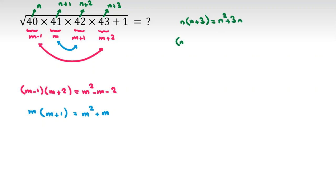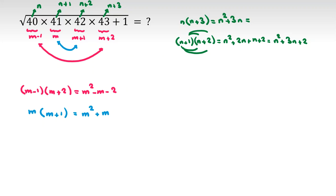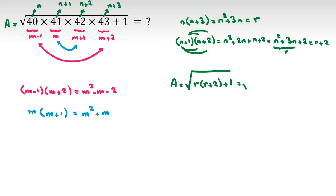And n plus 1 times n plus 2 equals n squared plus 3n plus 2. Now this is better. I call the first expression r, so r equals n squared plus 3n, and the second is r plus 2. So the expression under the root becomes r times r plus 2 plus 1, which equals the square root of r squared plus 2r plus 1.